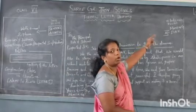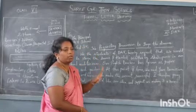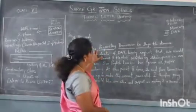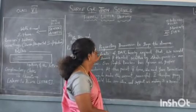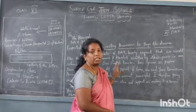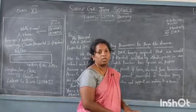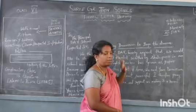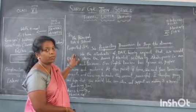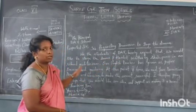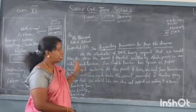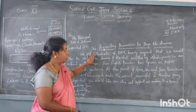That tells us who is writing — a student is writing — and to whom — to the principal of a school. The subject, which clarifies that idea, is 'Requesting permission to stage the drama.' It is clear that the students are asking permission to stage a drama in the school's auditorium or wherever the school has arranged, and they are seeking permission from the principal. The letter begins with a single tab space before the paragraph, and the body starts: 'As students of AV, we hereby request to stage the drama of Hamlet written by Shakespeare in our school's auditorium.'